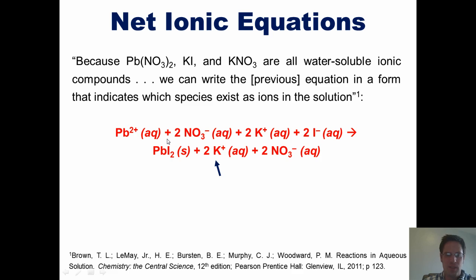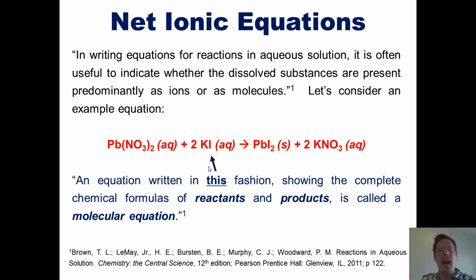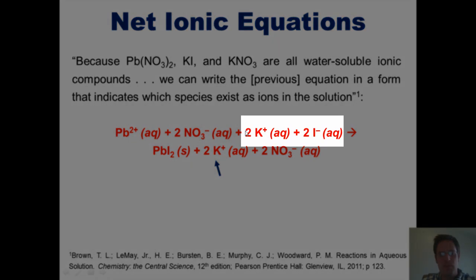In a similar vein, potassium iodide is soluble in water, so I'm going to saw it in half, separating out a K⁺ ion and writing AQ next to it, plus an I⁻ ion with AQ next to it. Because there is a 2 as a coefficient in front of this whole compound, each individual ion — K⁺ and I⁻ — also gets an individual 2 in front of it.